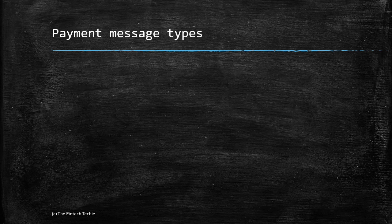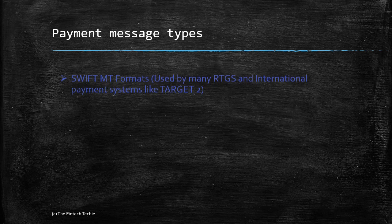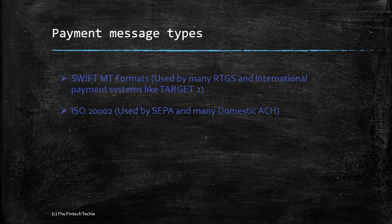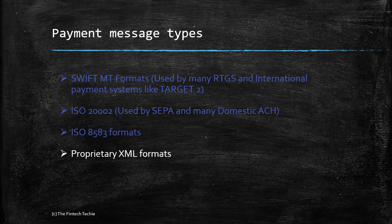Coming to message types — since messages play a clear role, what are the different types? Firstly, the most common one used for international banking and many domestic RTGS transfers: the SWIFT MT formats. Second most widely used is the ISO 20022 format, used by SEPA (the European payment method), and many domestic automatic clearing houses have also adopted it. Thirdly, the ISO 8583 format, used by credit card and debit card payments. Apart from these three international standards, banks are free to use proprietary XML formats as prescribed by the central bank, or structured file-based formats for electronic transfers — these are the five most popular ones.